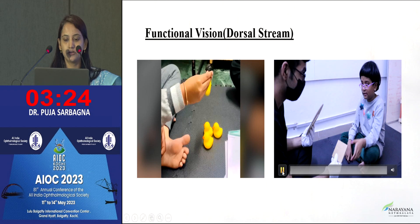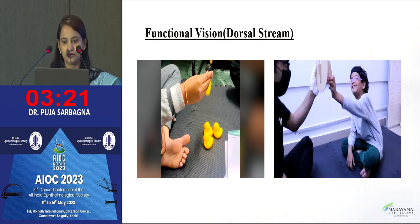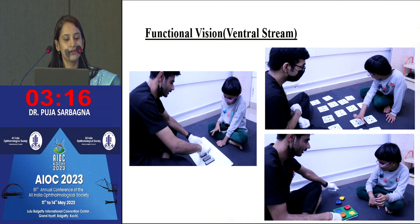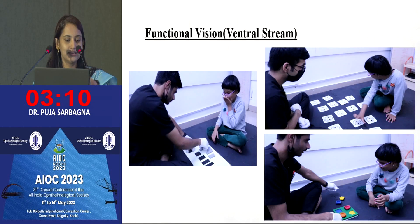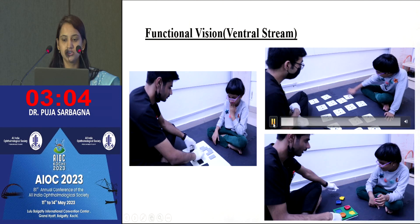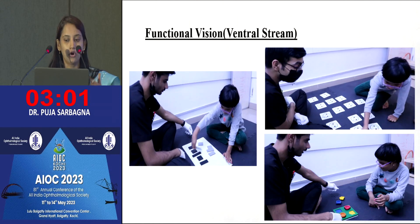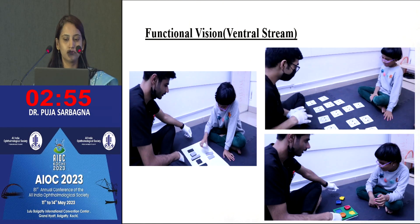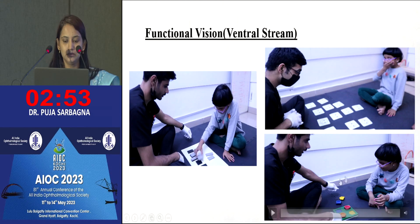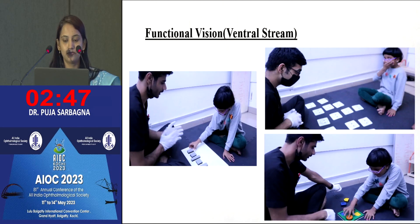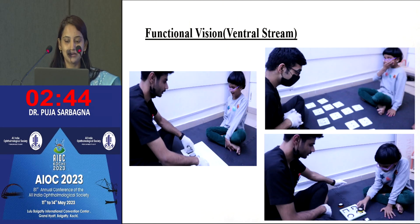Next is the Lea mailbox — used for direction, where the child places an object through a slot. Then for ventral stream function: first is size recognition using Lea rectangles — the child matches shapes of the same size. Next is the Lea emotional card, used to train the child's brain to recognize emotions of the mother and other people — cards are placed and the child matches them. Then the Lea puzzle, used for color and contrast, where the child learns to match colors and contrast across four shapes.